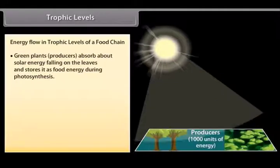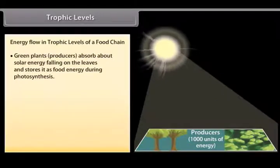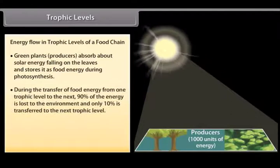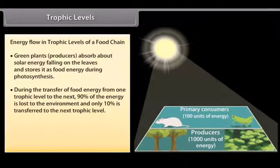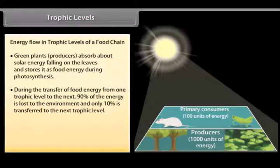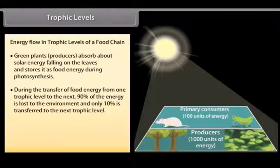Trophic levels. Energy flow in trophic levels of a food chain. Green plants producers absorb about 1% of solar energy falling on the leaves and stores. During the transfer of food energy from one trophic level to the next, 90% of the energy is lost to the environment and only 10% is transferred to the next trophic level.